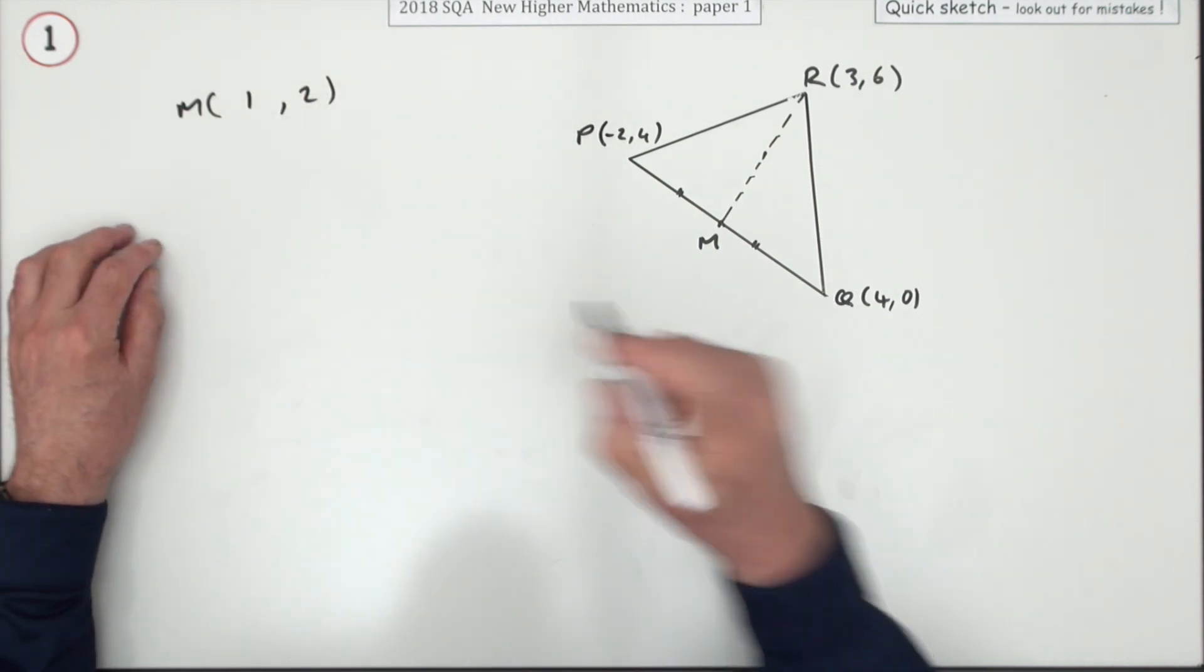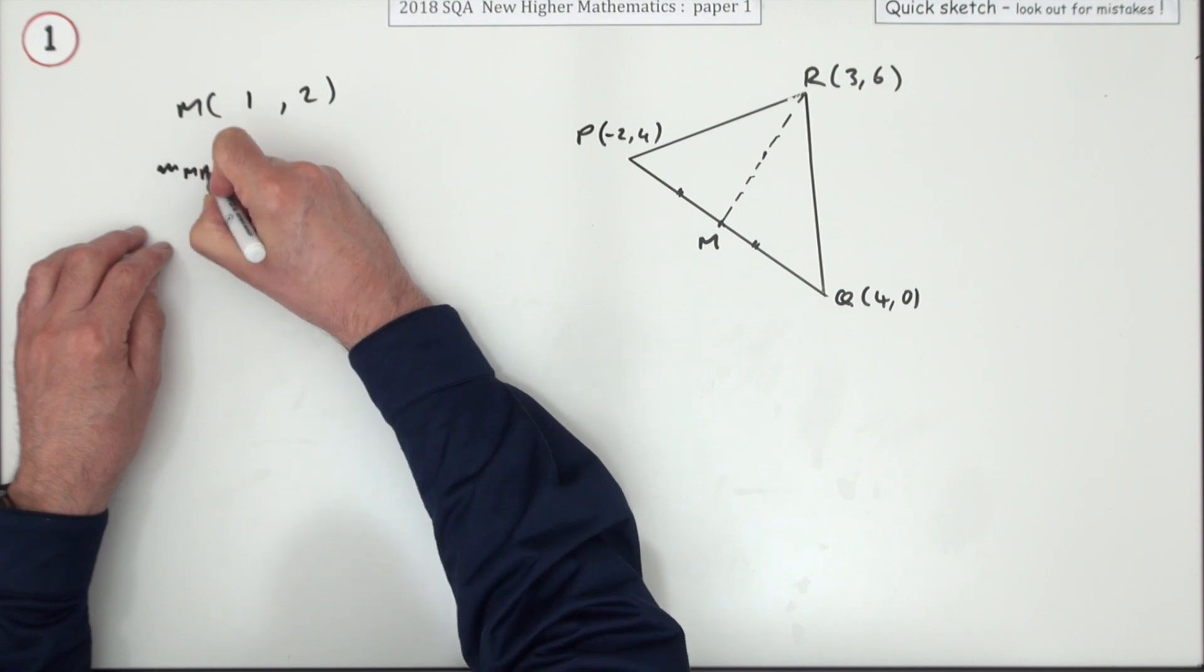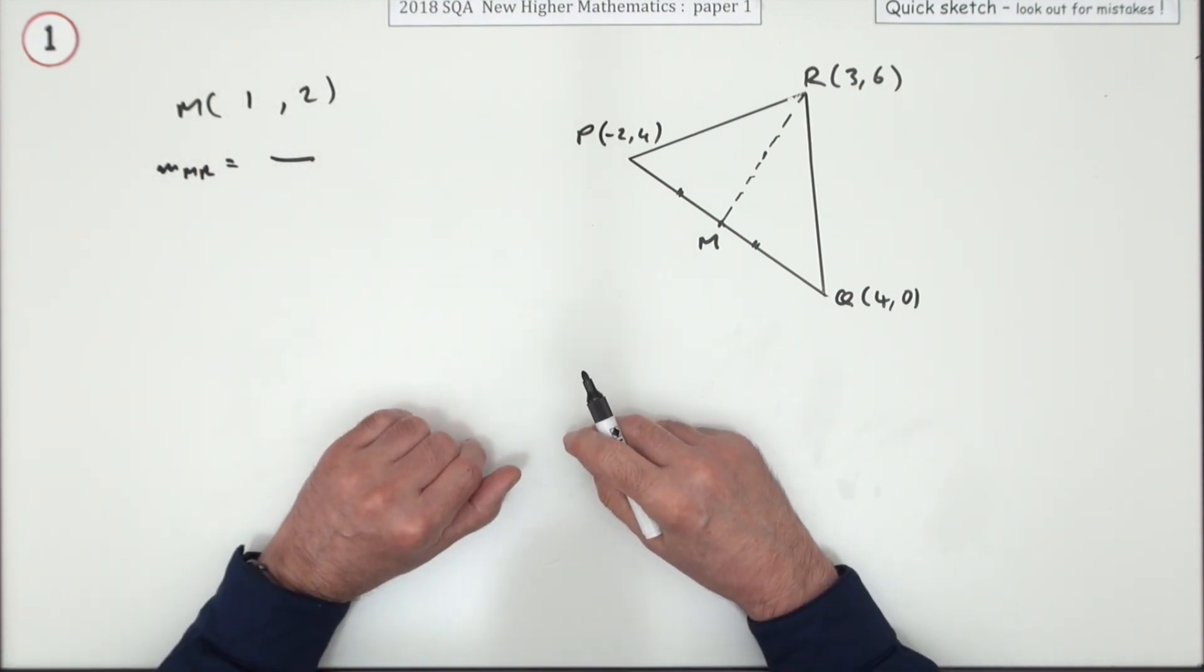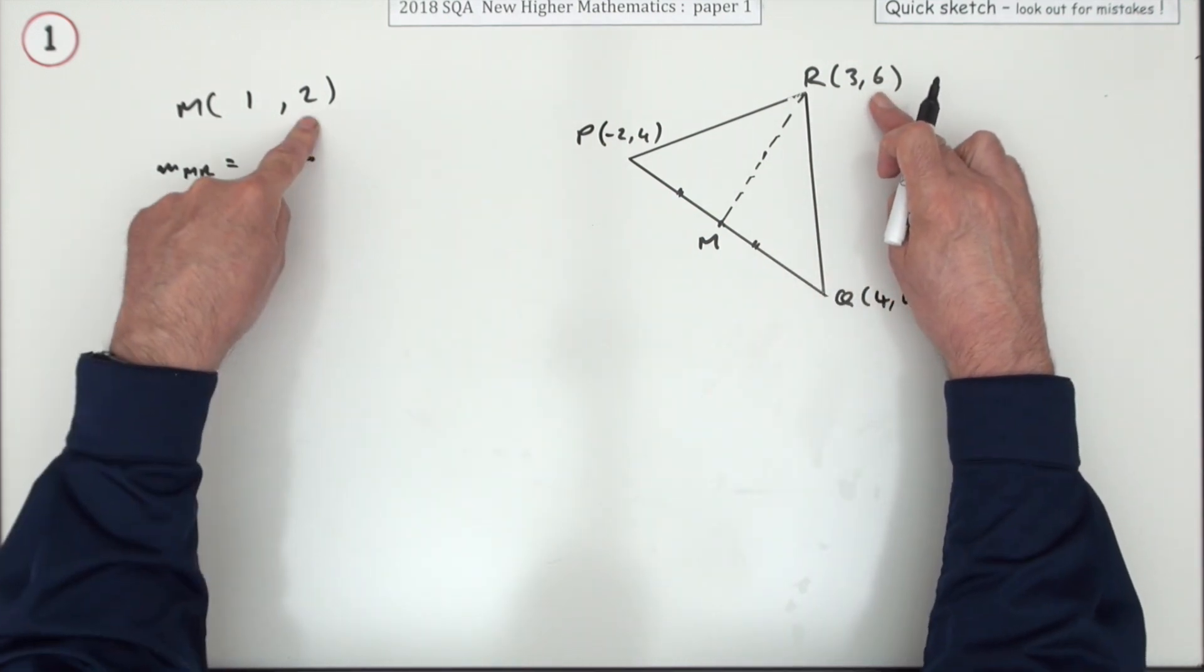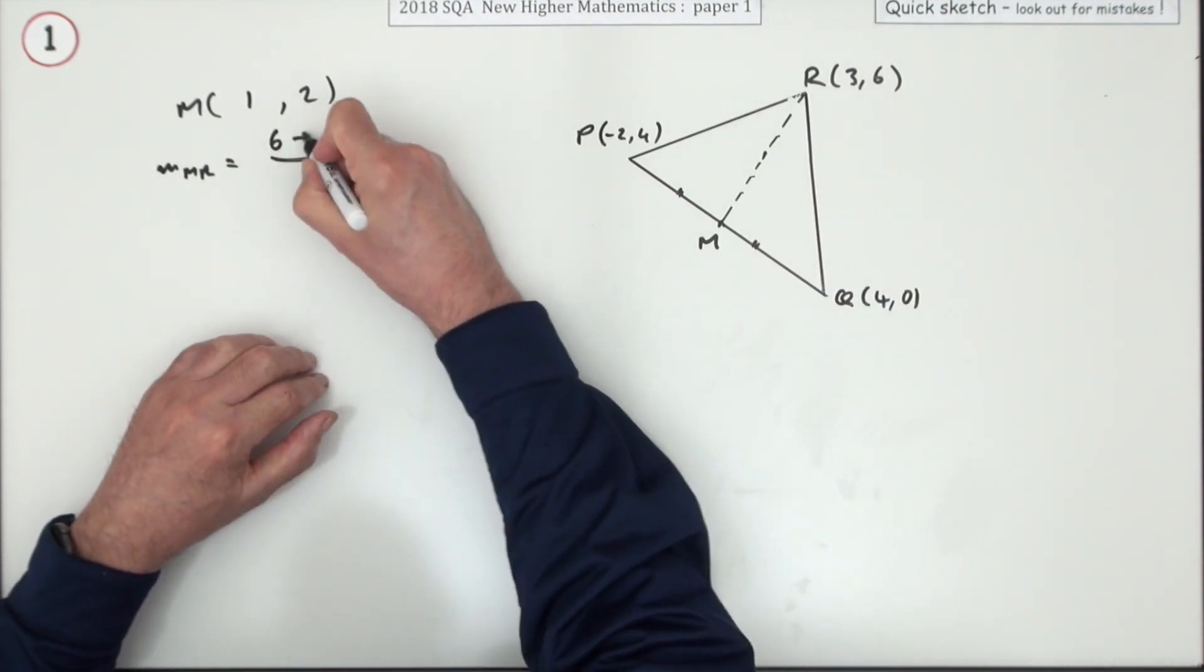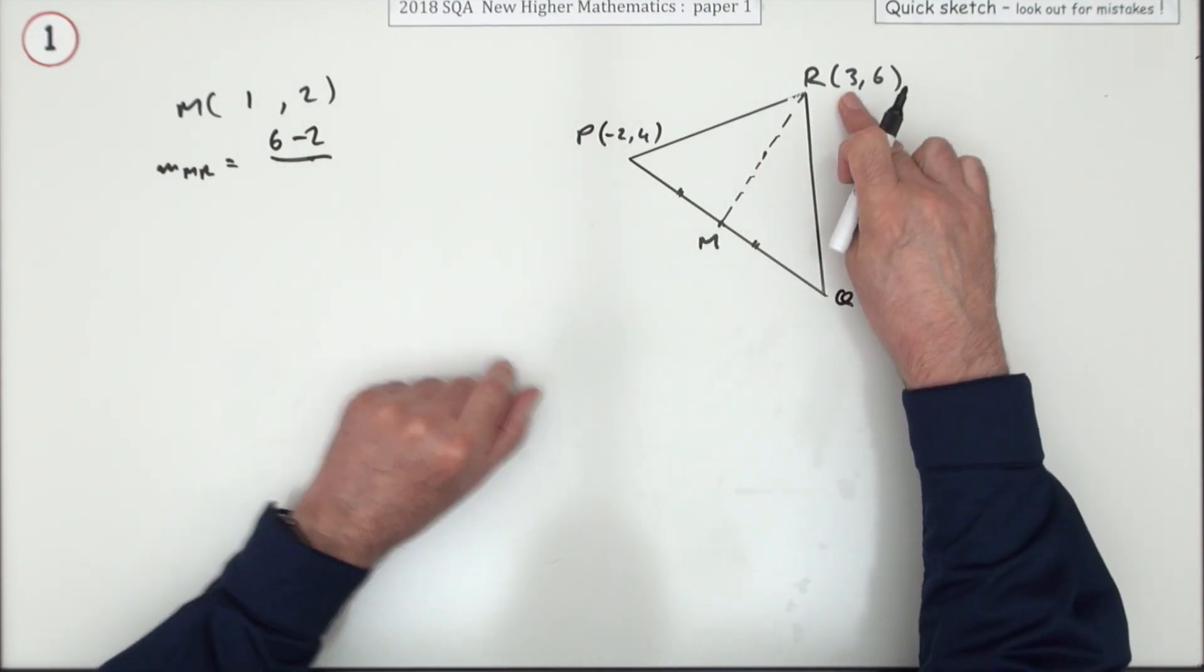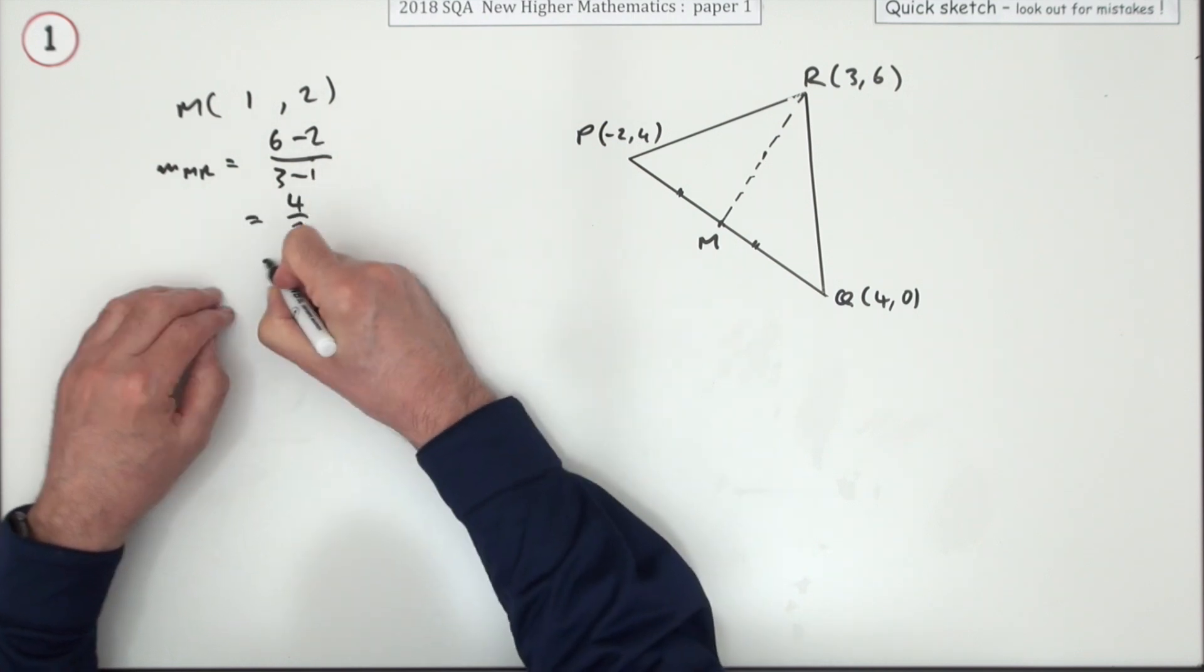The next thing would be to get the gradient of that line. The gradient of MR will be the difference in the y coordinates over the difference in the x coordinates. I'm going to go in quickly with them: six take away two for the difference in the y coordinates, keeping it in the same order. Three take away one for the difference in the x coordinates, so that's four upon two, which is two. I guess that's the second mark.